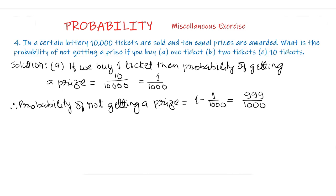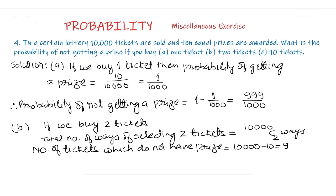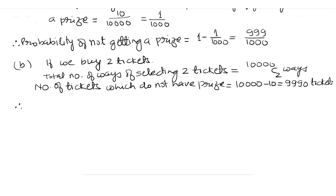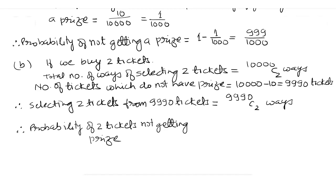Part B: if we buy 2 tickets, the total number of ways of selecting 2 tickets equals 10,000C2. The number of tickets which do not have a prize equals 10,000 − 10 = 9,990 tickets. Therefore, selecting 2 tickets from 9,990 tickets equals 9,990C2 ways. So, the probability of 2 tickets not getting a prize equals 9,990C2 upon 10,000C2.